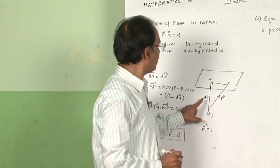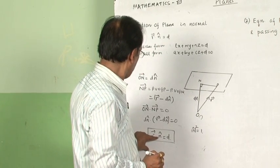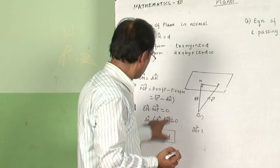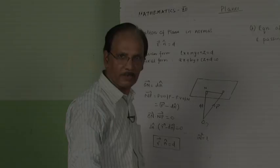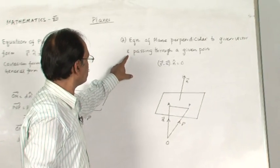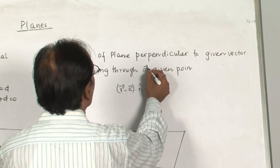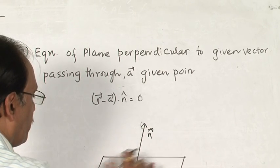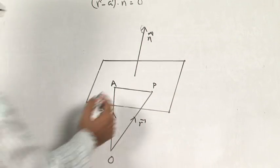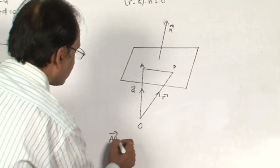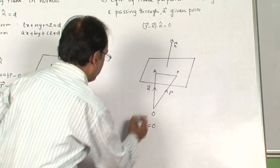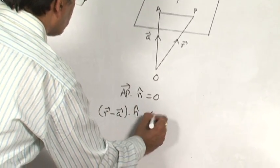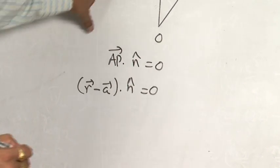To find the equation of a plane, we need a point, the unit vector along the direction of the normal, and the length of the normal. When a point with position vector A is given and n̂ is the unit vector perpendicular to the plane, then vector AP dot n̂ equals 0. Vector AP is r minus A, so (r minus A) dot n̂ equals 0. This is the equation of the plane in vector form.